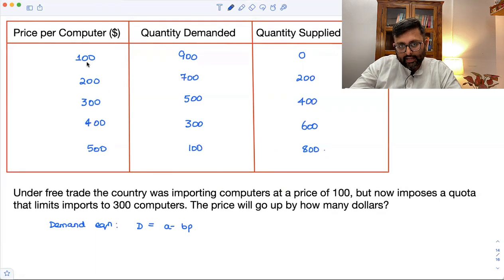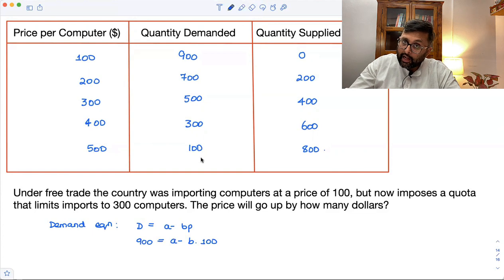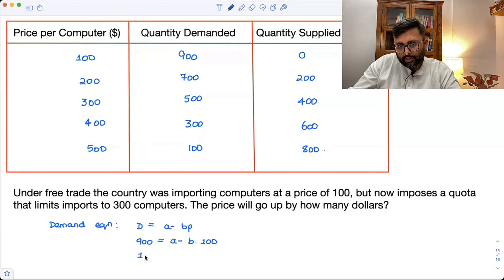So at price 100, 900 is demanded. At price 500, 100 is demanded. I've picked up these two points. Let's say 100. You can take up any other point also. Let me just subtract second from the first.